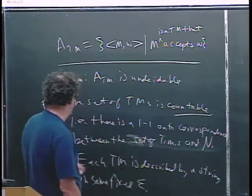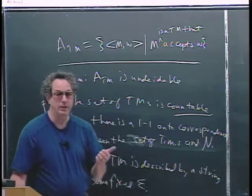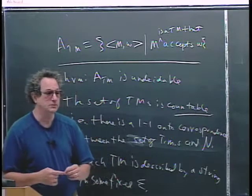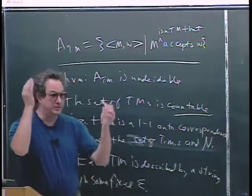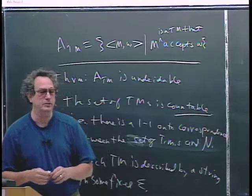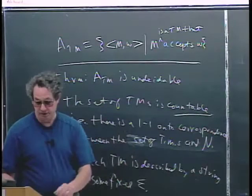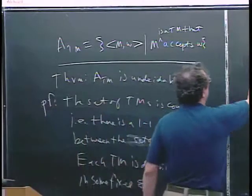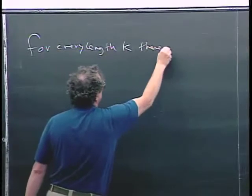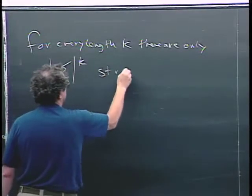This is an important technical point. Each Turing machine is described by some string. So if you have a fixed alphabet of, say, 256 characters: how many strings of length 1 can there be? 256. Strings of length 2? 256 squared. Strings of length k? 256 to the k. So for every length k, there are only alphabet-size-to-the-k strings of that length — a finite number.